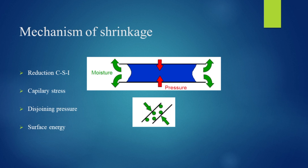The second mechanism: due to loss of moisture, there is capillary tension. That capillary tension is overcome, and there is a compression action on the concrete. That is why it is shrinkable. That is another mechanism.